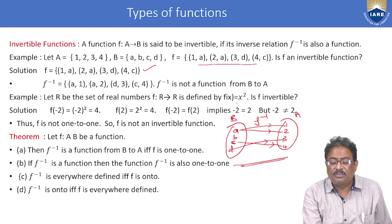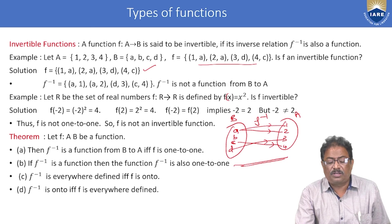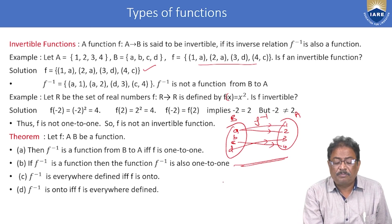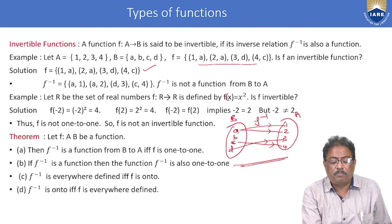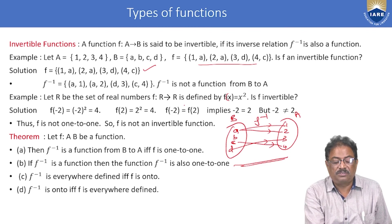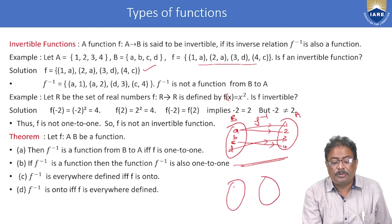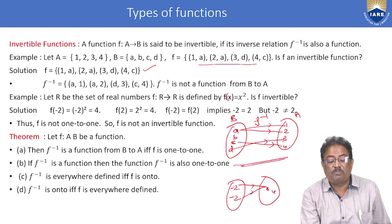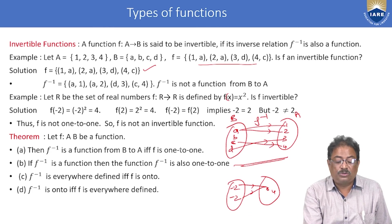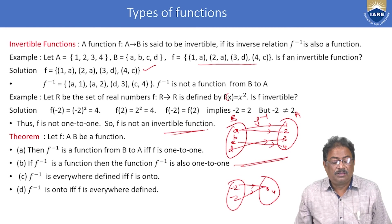For f(x) = x² defined from R to R — is it invertible? The inverse f⁻¹ is not a function because, for example, 4 maps to both 2 and −2 under f⁻¹. Since f⁻¹ does not give a unique value, it is not a function, and therefore f(x) = x² is not invertible.